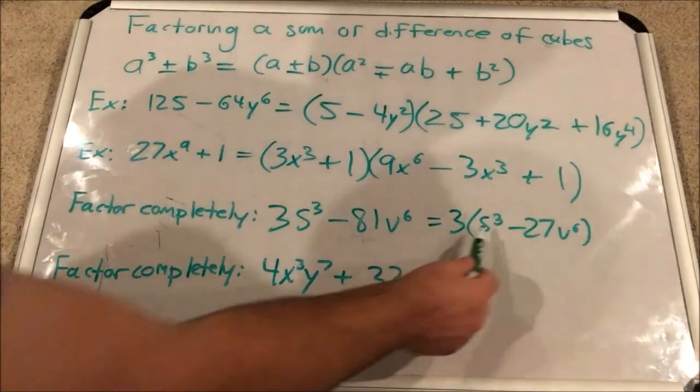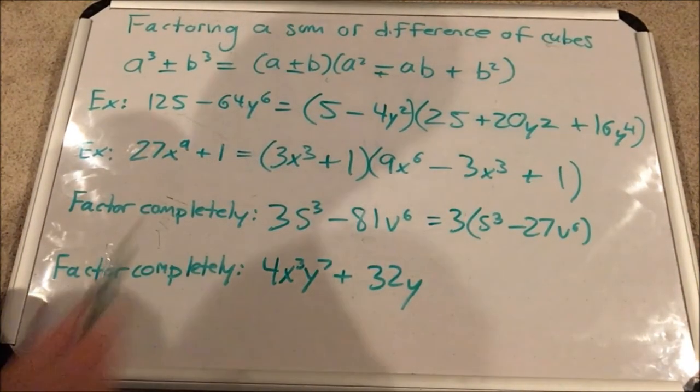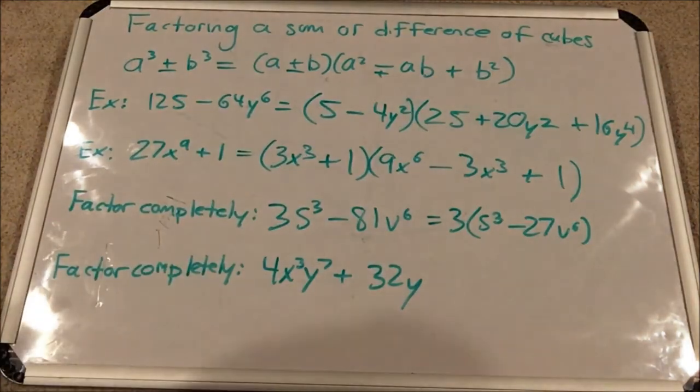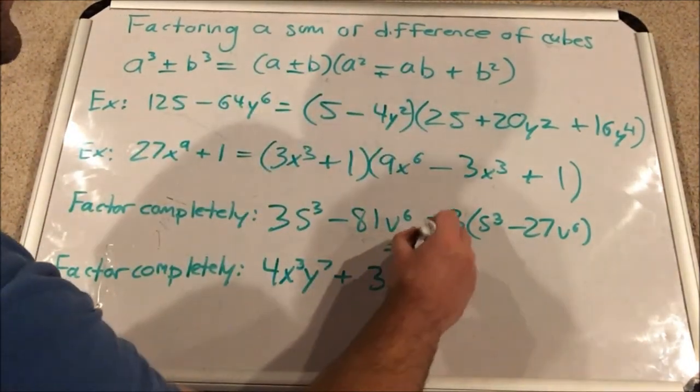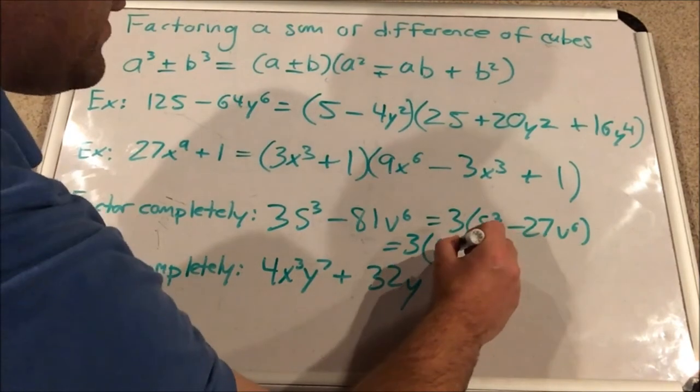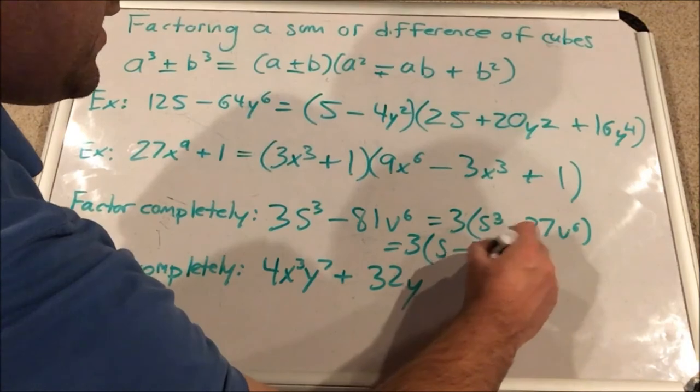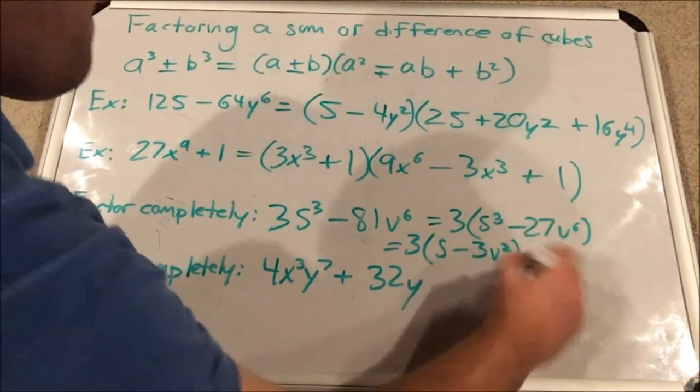I'm going to rewrite this as 3 times s cubed minus 27 v to the 6th. Okay. That binomial in parentheses is a difference of two cubes. So I can factor it using the difference of two cubes factorization. So this equals 3 times the cube root of s cubed, s, or it's the cube root of 27 v to the 6th, which is 3 v to the 2nd. Okay.